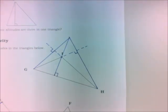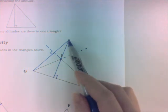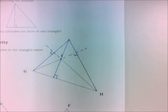Notice that when you're creating the altitudes of an obtuse triangle, they all intersect at one point outside of the triangle. That point is called the orthocenter.